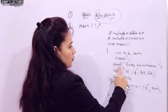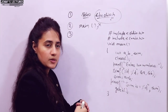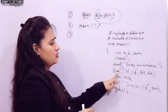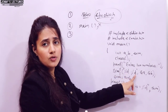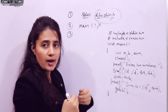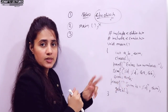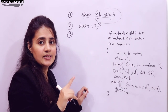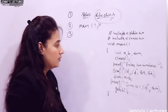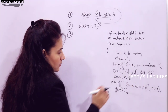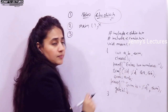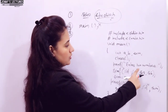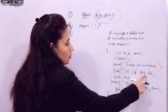You might also make a spelling mistake with 'clrscr'. Sometimes in scanf you might write a semicolon inside the function — for example between '%d' and '%d' — this gives a logical error, not a syntax error. It will accept only one value and then take a garbage value for the second.